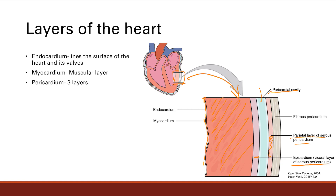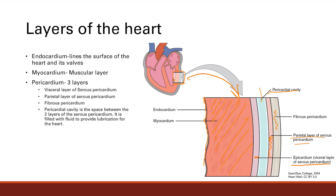And finally, we have the fibrous pericardium — that's the third layer. So the pericardium is basically the wrapper of the heart. The serous pericardium is like other serous structures — it secretes fluid, and that fluid goes into this pericardial cavity.